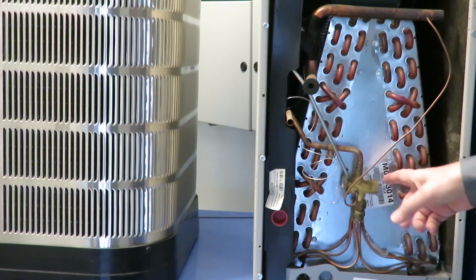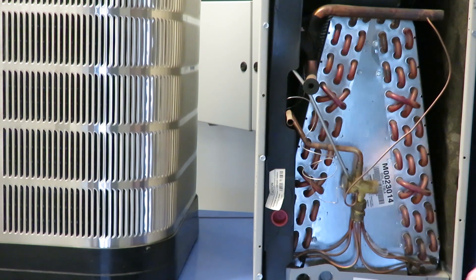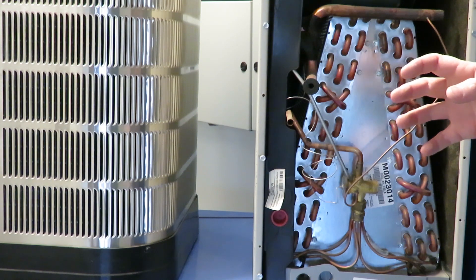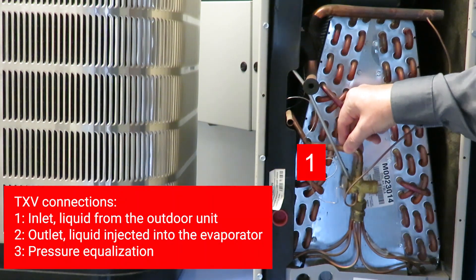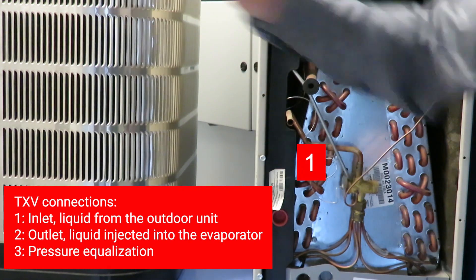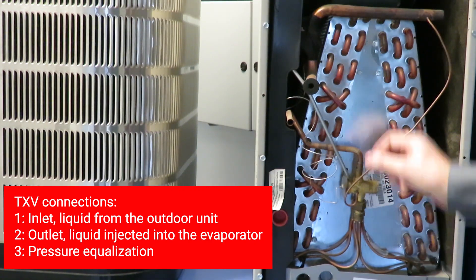On a normal expansion valve we have three connectors. We have one here that is the refrigerant coming from the outdoor unit. So that is the inlet.